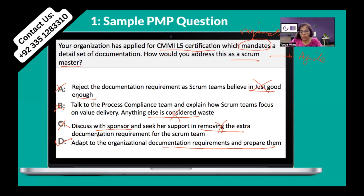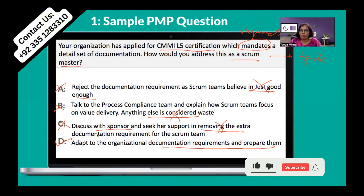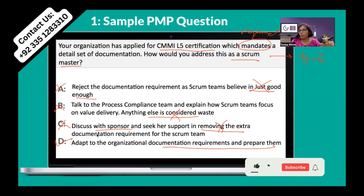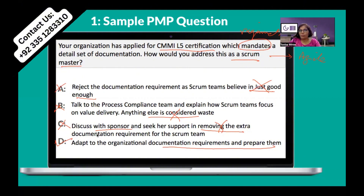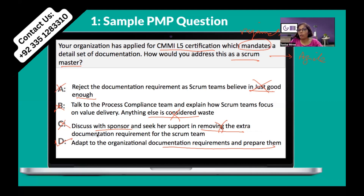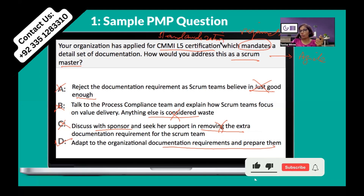Very well said. The only thing I want to add is: we have already talked about this when discussing the manifesto — Agile doesn't say you don't need documentation at all. Agile says only work on the artifacts, plans, documents, SOPs, templates, or checklists that you actually need and use them in your process. Don't just create and keep them in folders where nobody looks at them. In this question it is clearly stated that this is part of standardization — CMMI Level 5 is a standardization requirement.